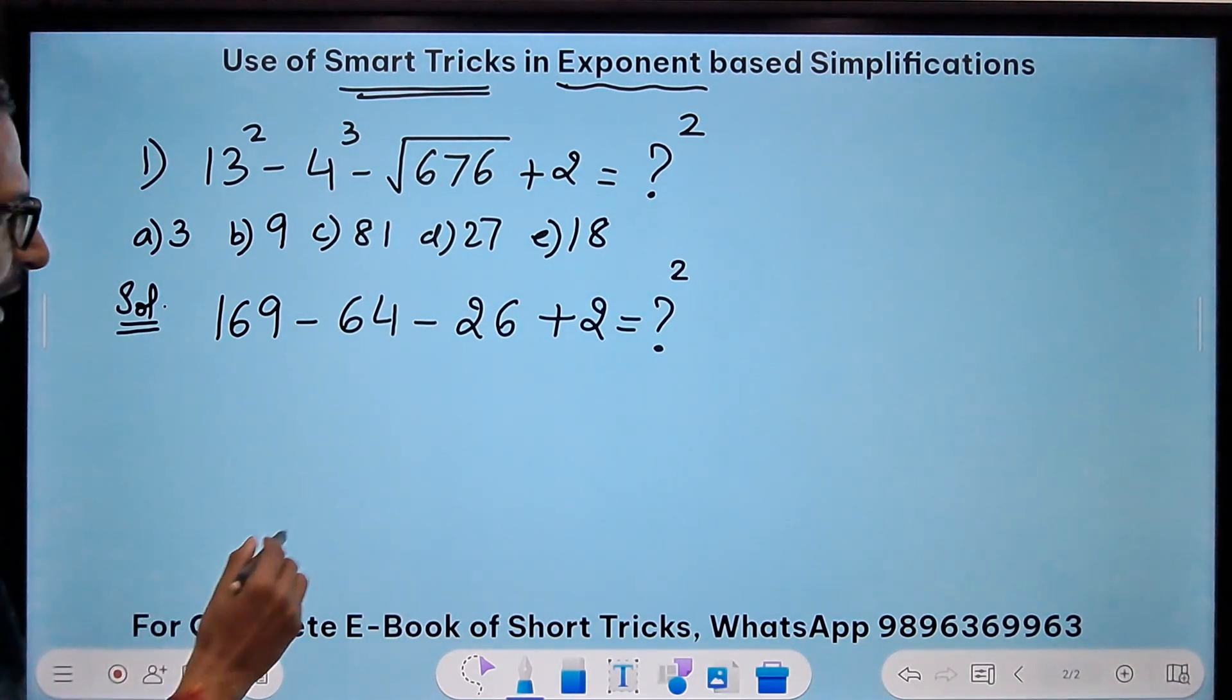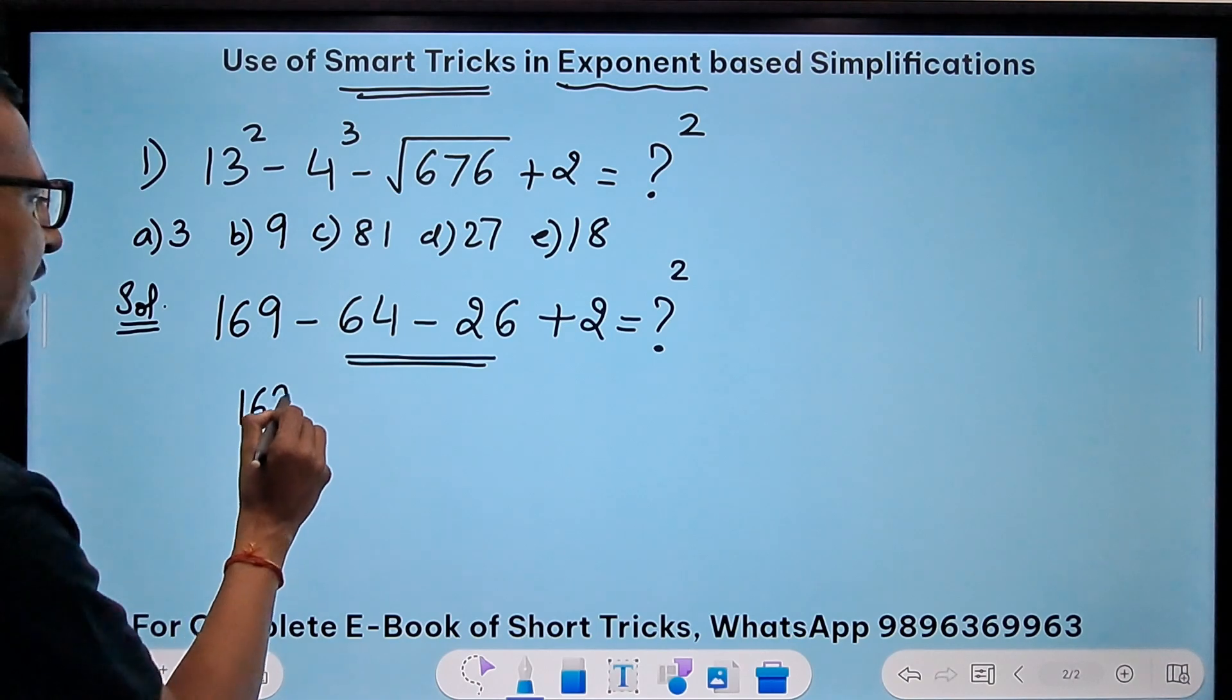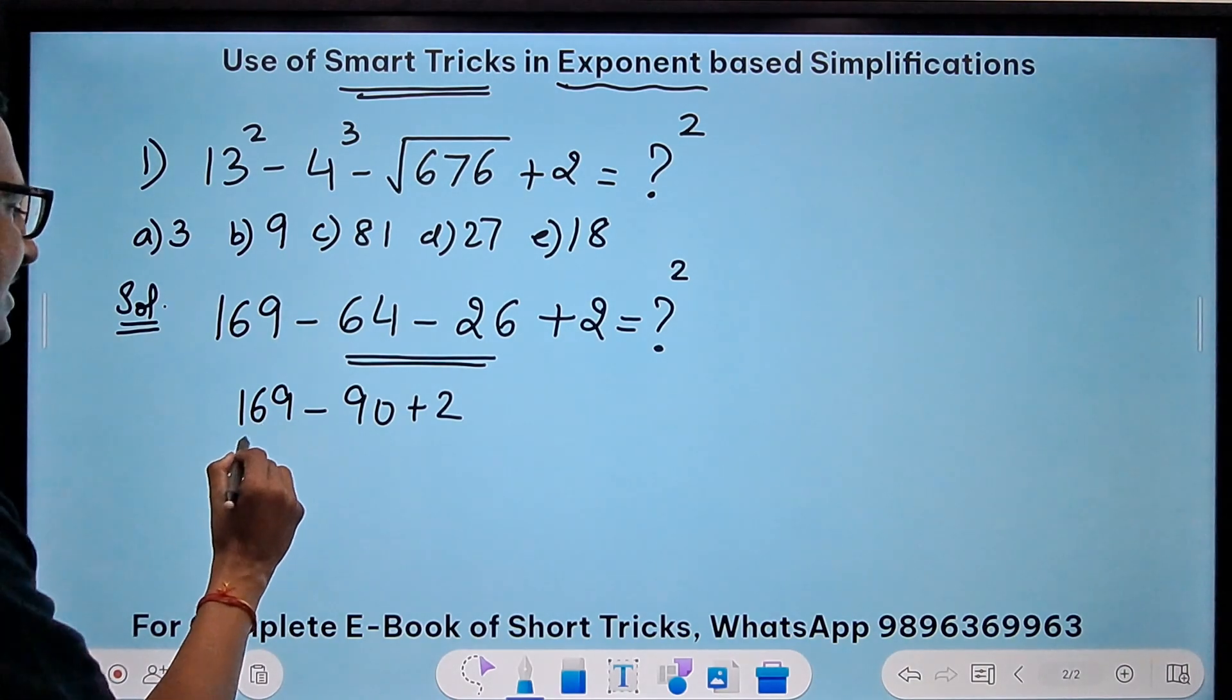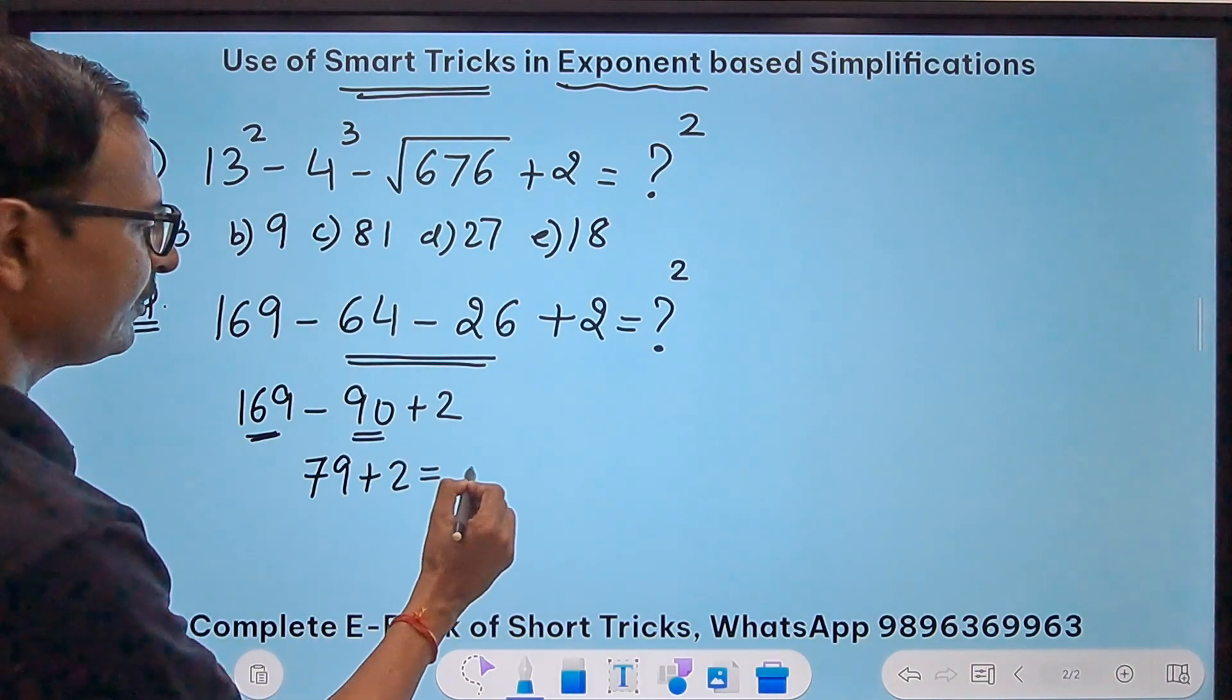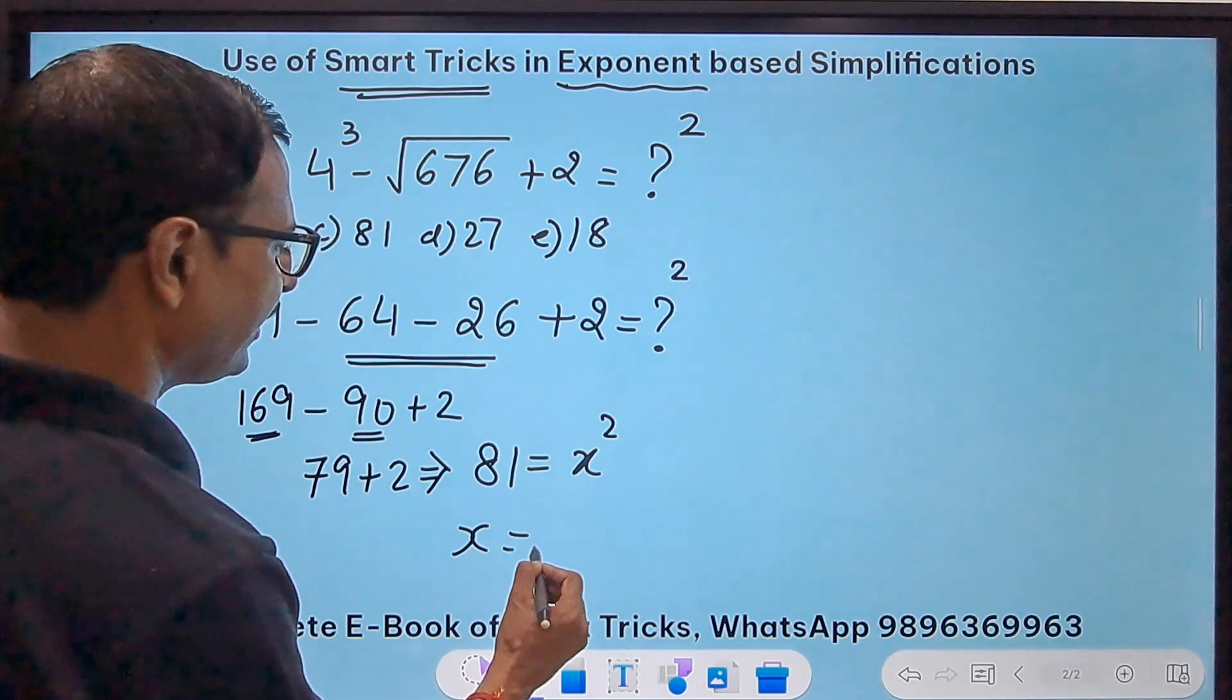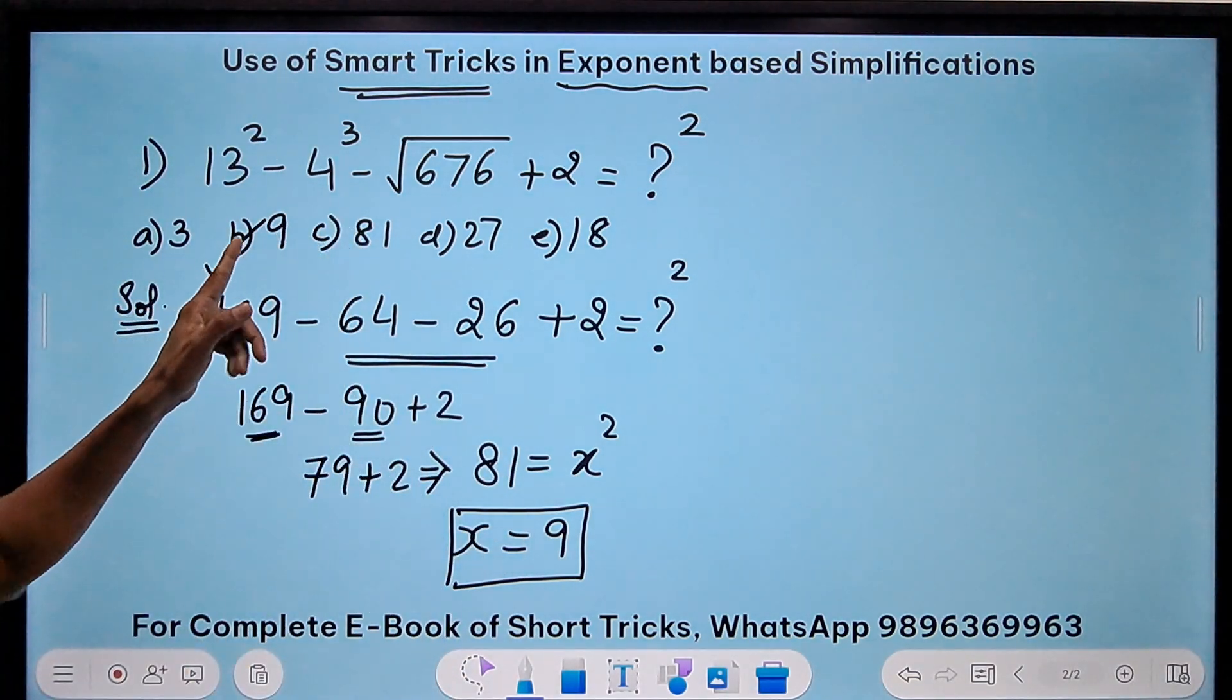So I need to know the basic calculations. So instead of subtracting these two, I'll add these two negatives. So 169 - 64 - 26 is 90, and plus 2, so this becomes 169 - 90 is 79, and 79 + 2 happens to be 81. So 81 = x², and obviously the value of x will be 9 because 9² = 81. So your correct option is option number b) 9.